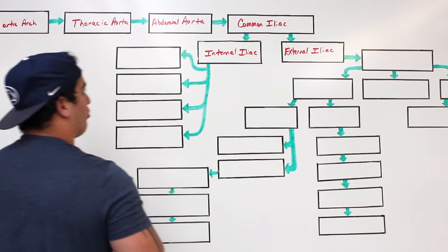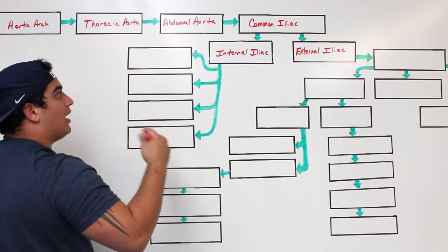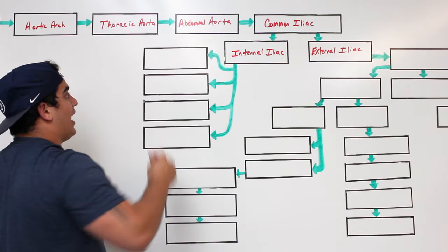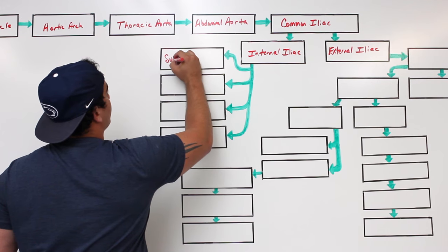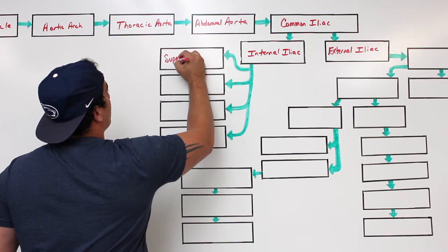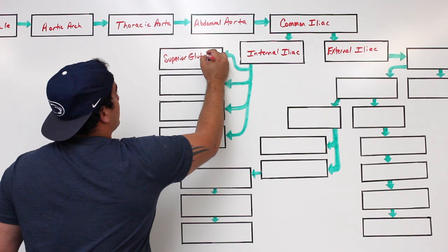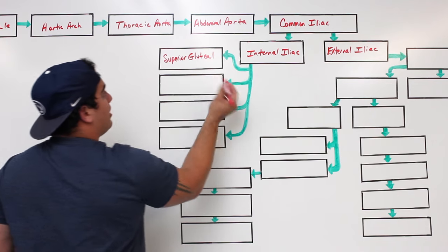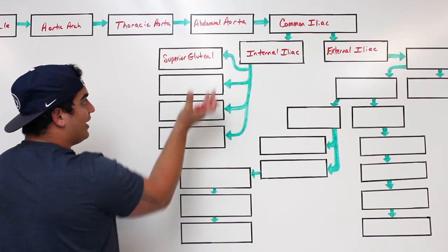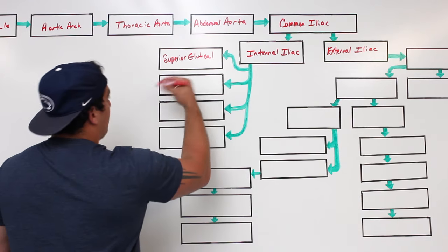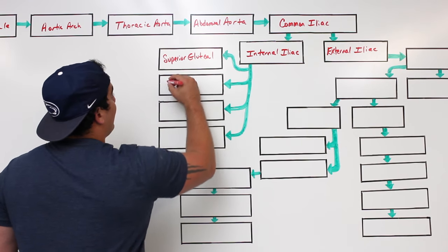The internal iliac artery gives off a couple of important branches. One branch supplies the upper part of the gluteus maximus — that's called the superior gluteal artery. Another branch supplies the inferior portion of the gluteus maximus and gluteus medius — that's called the inferior gluteal artery.